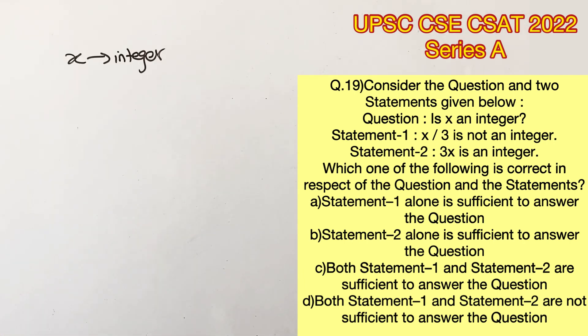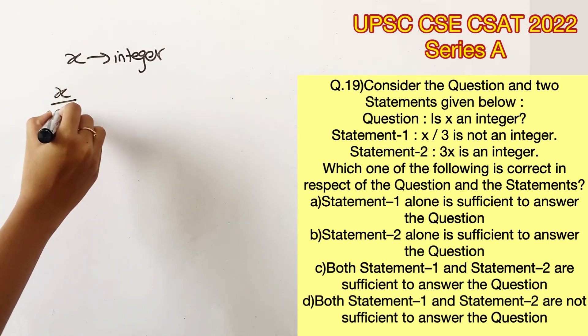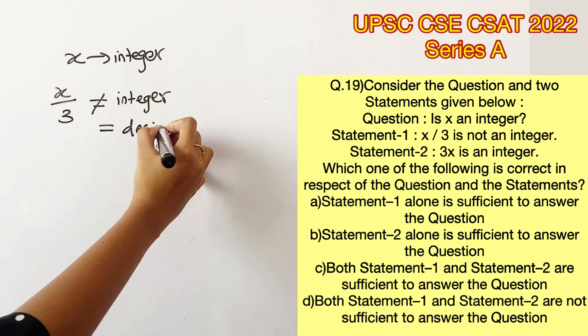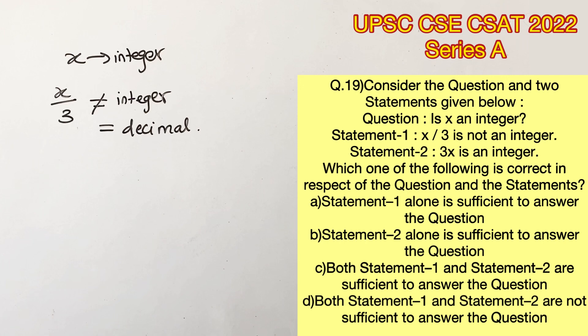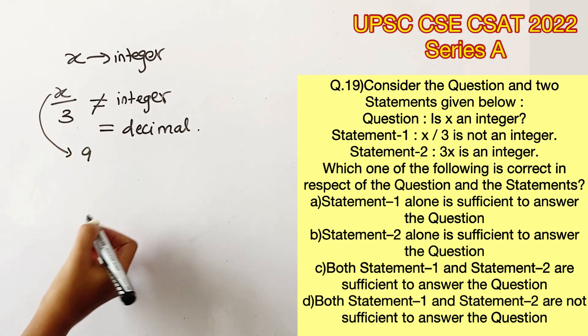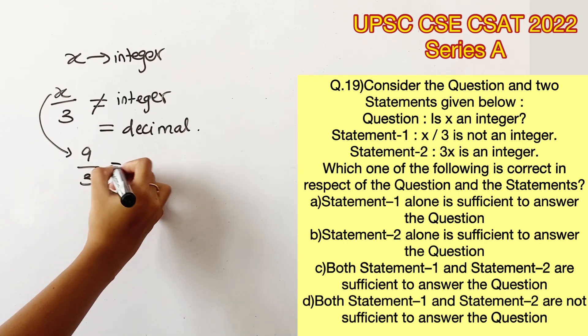The first statement says that x by 3 is not an integer, which means that x by 3 is a decimal value. So let's try a trial and error method. In the place of x, I'm going to substitute a value which is divisible by 3. Let's take 9 now.